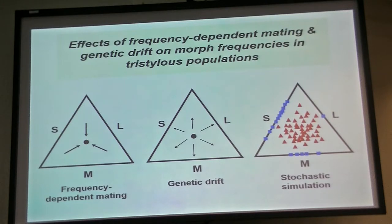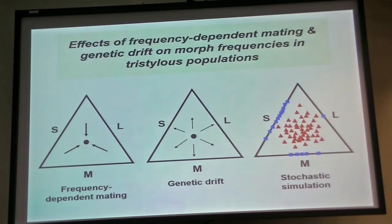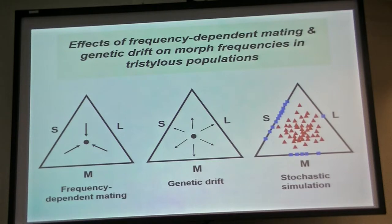Genetic drift will cause deviation away from that isoplethy equilibrium. Intuitively, you might think that since drift is a random process, if we lose morphs from populations through fluctuations in population size, drift, and bottlenecks, we'd lose the morphs at equal probability. But that's not what happens. There's a strong asymmetry in the likelihood of loss of the three morphs, as indicated by the stochastic simulation. The short-styled morph is lost most often, followed by the mid, followed by the long. Once a population loses the short, it cannot regain trimorphism — because of the genetic architecture of tristyly, there is a constraint built into the inheritance.